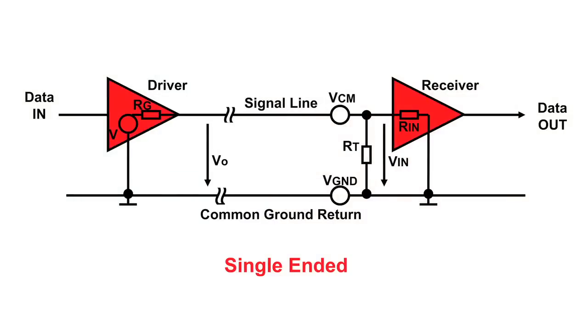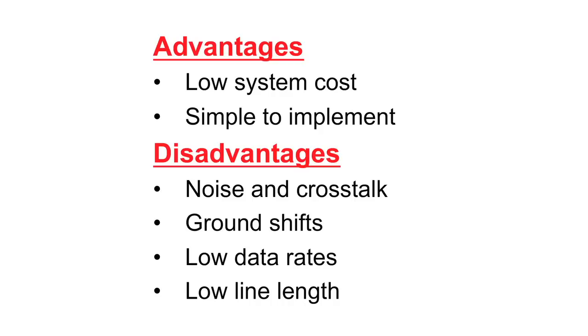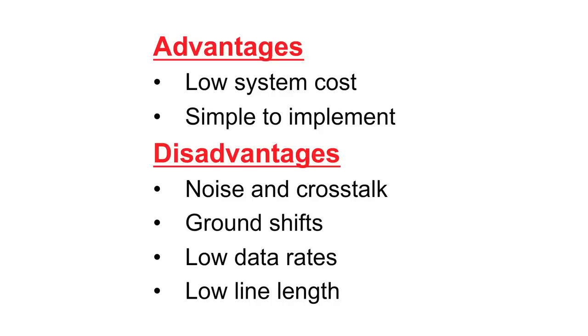Understanding the difference between single-ended, or unbalanced, and differential, or balanced, transmissions is essential to help us understand how these three standards differ. Single-ended transmission is performed on one signal line, and its output is interpreted with respect to ground. For simple, low-speed interfaces, a common ground return path is sufficient.